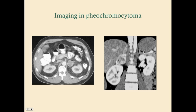That's pretty much it for pheochromocytoma. The USMLE likes to include a pheochromocytoma question, but they're generally straightforward. Just remember: alpha blockers first.